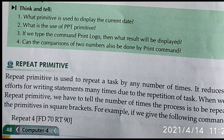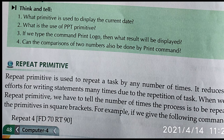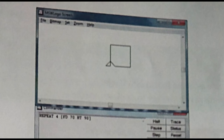The REPEAT Primitive is used to repeat a task any number of times. It reduces a lot of effort for writing statements many times due to repetitive tasks. When you use the repeat primitive — for example, FD 70 then RT 90, that is forward 70 points then right 90 degrees — repeat this process 4 times, and automatically it will draw one rectangle. So, REPEAT 4 [FD 70 RT 90] — 4 times it will make the same actions, and by that we can draw a square.